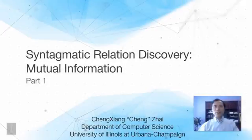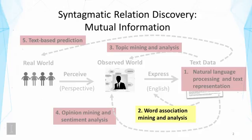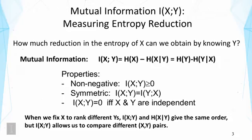This lecture is about syntagmatic relation discovery and mutual information. We are going to continue discussing syntagmatic relation discovery. In particular, we are going to talk about another concept in information theory called mutual information and how it can be used to discover syntagmatic relations. We previously discussed a problem with conditional entropy: the conditional entropy computed on different pairs of words is not really comparable, which makes it hard to discover strong syntagmatic relations globally from a corpus.